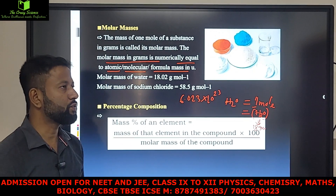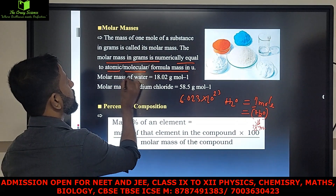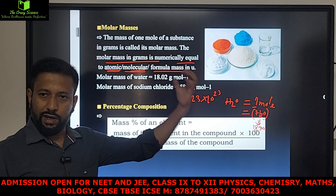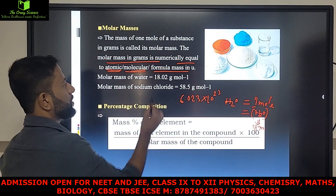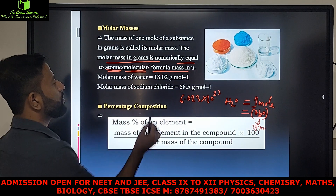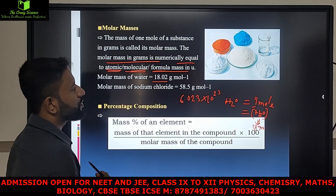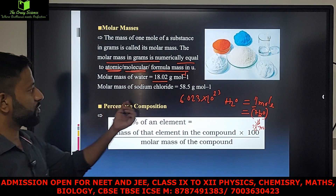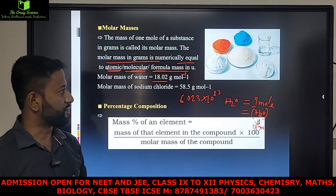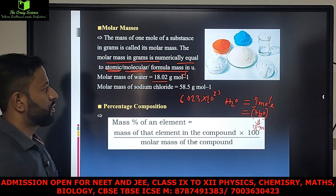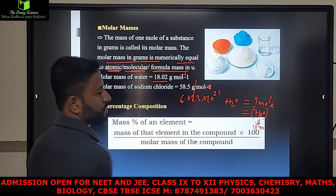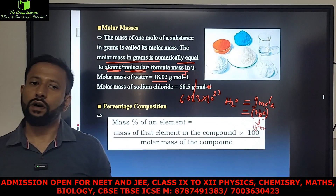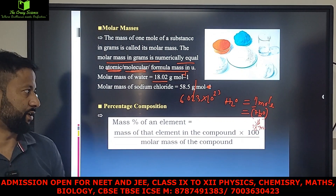Molar mass is equivalent to the atomic mass for an element, the molecular mass for a molecule, and the formula mass for an ionic compound. Molar mass of water equals 18.02 grams per mole. Molar mass of sodium chloride is 58.5 grams per mole. So for different substances, their molar mass and weight would be different.